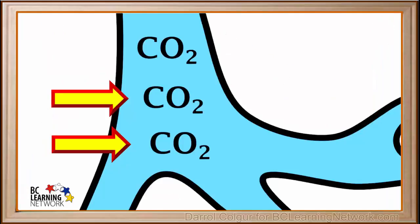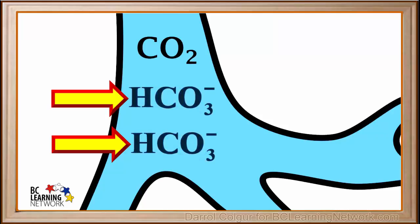It turns out that close to two-thirds of the CO2 dissolved in blood reacts with water to form bicarbonate ions, HCO3-. So carbon dioxide is transported both as bicarbonate ions and as CO2 in the blood. Most of the CO2 portion actually attaches itself to a hemoglobin molecule, but we'll just consider it as CO2 here for simplicity.